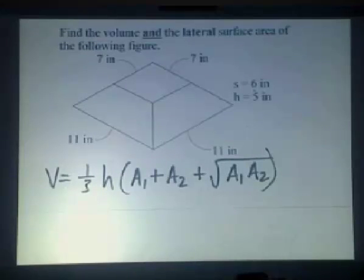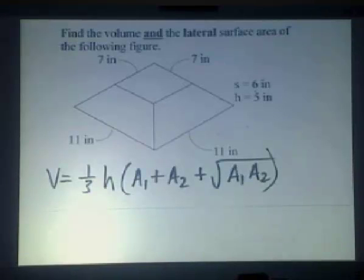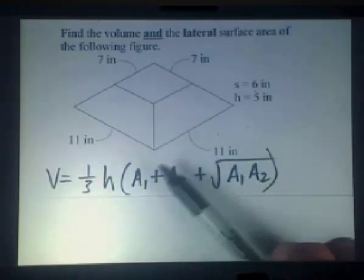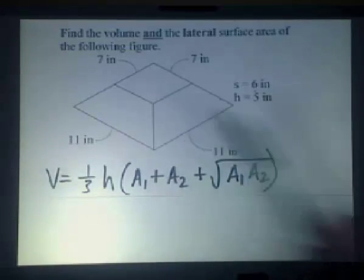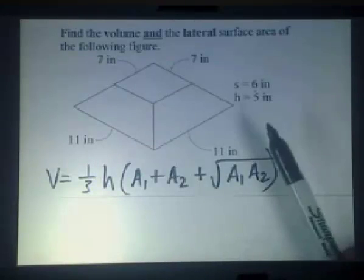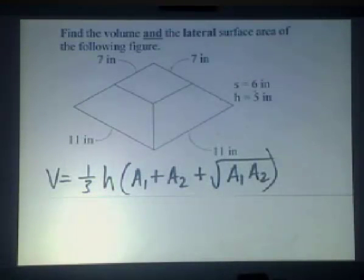In this example, we want to find the volume and the lateral surface area for the following figure. In this case, we're dealing with a frustum of a pyramid. And our pyramid has a square 11 by 11 base. And a frustum is when we take that pyramid and chop it off so that the two bases are parallel with one another.